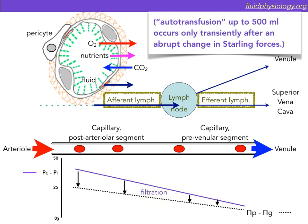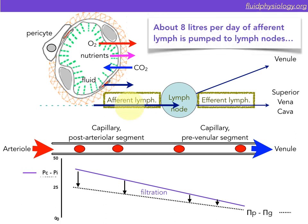An abrupt fall in capillary pressure can be brought about by acute blood loss or by the injection of an arteriolar vasoconstrictor like noradrenaline. In humans, that can lead to an autotransfusion of up to 500 mls of interstitial fluid back to the plasma, but the absorptive process is only transient, lasting perhaps 20 minutes. Around 8 litres a day of afferent lymph is pumped to the lymph nodes. Note that interstitial pressure is often sub-atmospheric, and so removing fluid from the interstitium requires an active pumping mechanism.